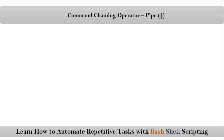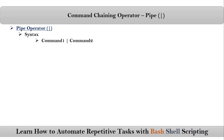Friends, here we are talking about the command chaining operator, that is pipe. Let me give you the syntax for the pipe operator — that means how we can club, combine, or chain multiple commands using the pipe operator. Not only two commands, we can club any number of commands. You can chain any number of commands in this way.